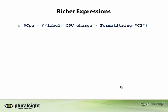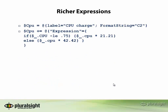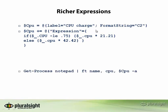We'll have a label 'CPU charge', and this is going to be formatted as currency. The expression I've got here is basically the expression key value — there's the expression key — and the actual expression, the script block, is: if the CPU is less than or equal to 0.75, then the value will be CPU times 21.21. Otherwise, it's $_.cpu times 4242.